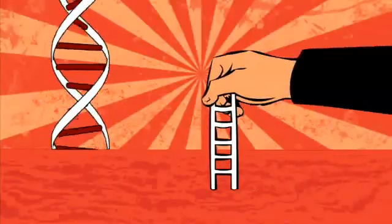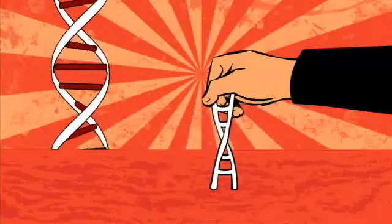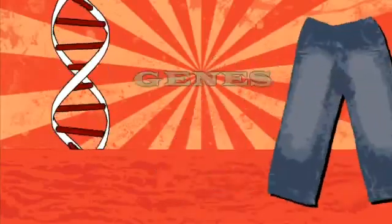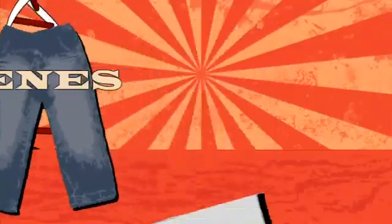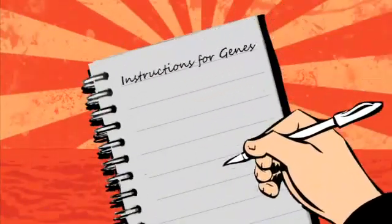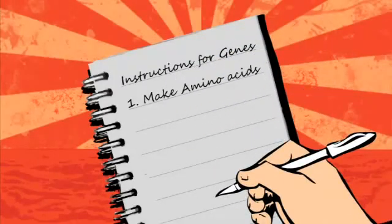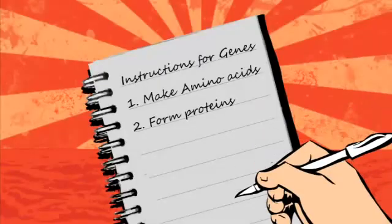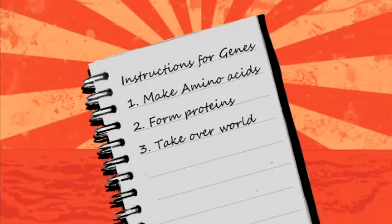hatred of broccoli, maybe, maybe not. DNA is shaped like a double helix, like a ladder that's been twisted into a spiral — a very small ladder. Short sections of DNA are called genes. Each gene has a specific purpose; it has the instructions for making a particular amino acid. These join in a particular order, again controlled by the genes, to form proteins.